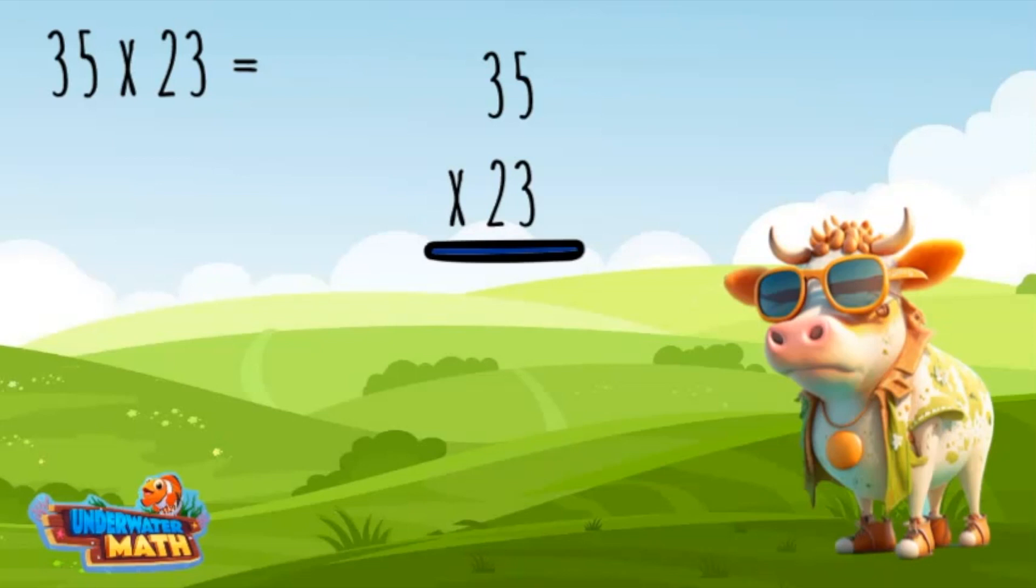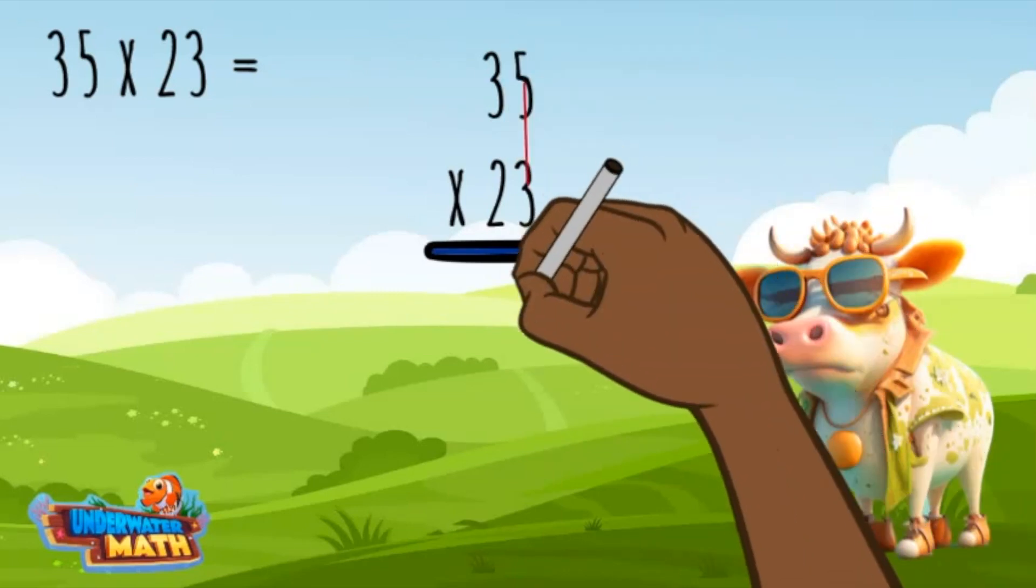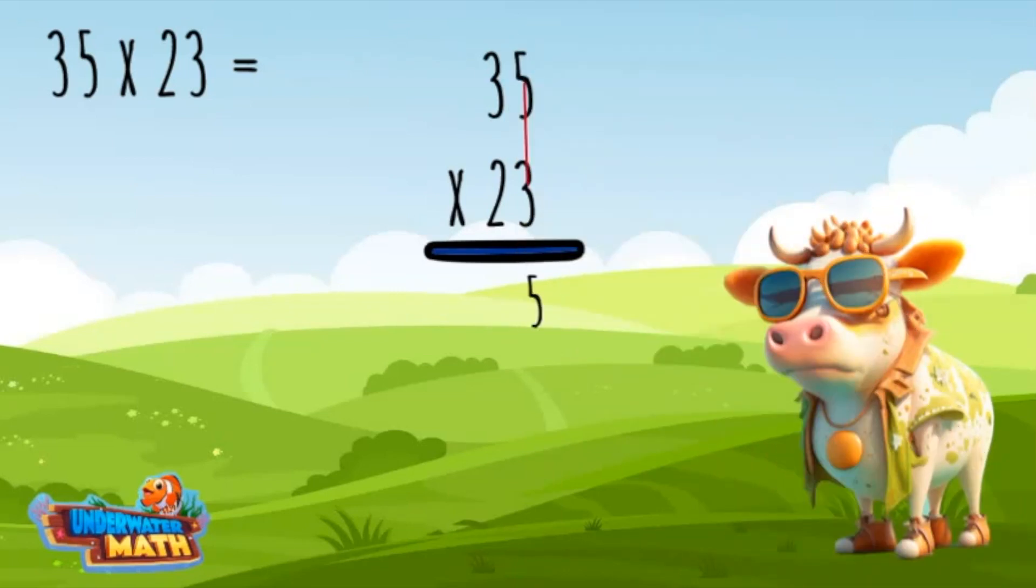Let me show you. Start in the ones place. I multiply three times five for an answer of 15. The five goes below the problem and the one is carried over to the tens place.